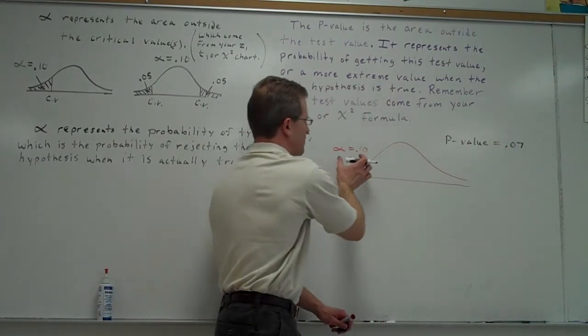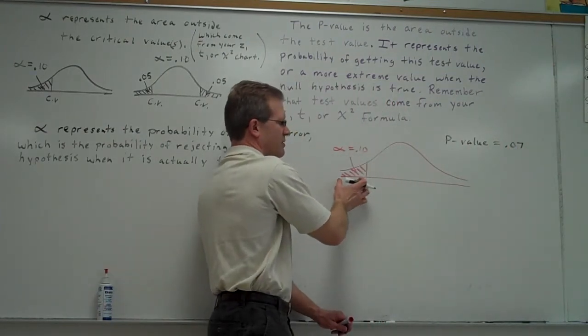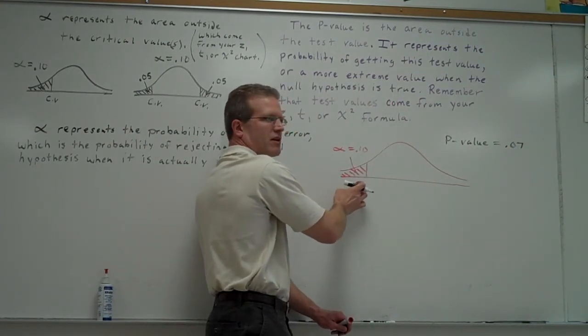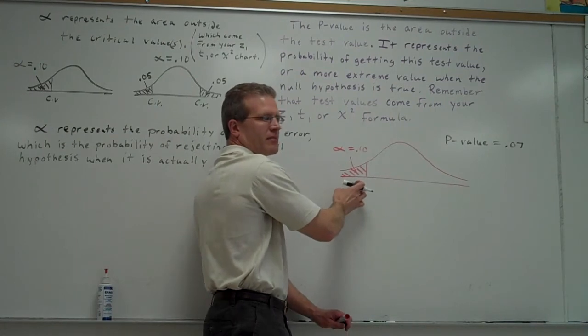When your p-value is smaller than your alpha, you know the test value's got to be in the critical region. Why would that be?